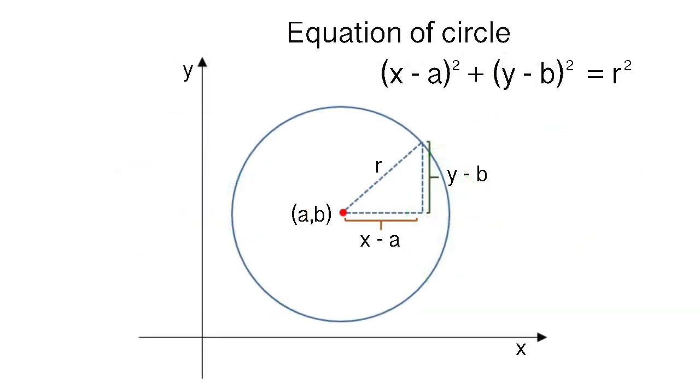In coordinate geometry, a circle with center (a,b) and radius r is the set of all points (x,y) such that (x-a)² + (y-b)² = r². If the center is at the origin (0,0), then this equation reduces to x² + y² = r².